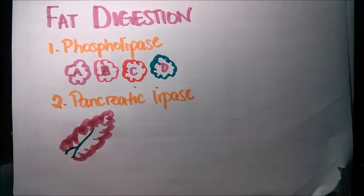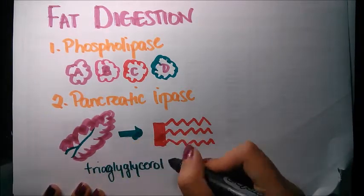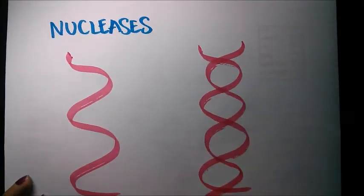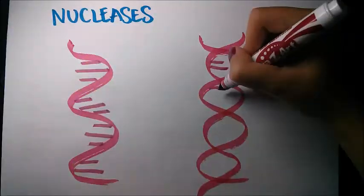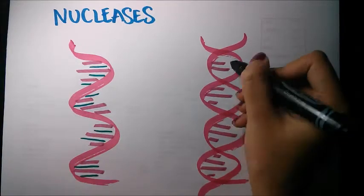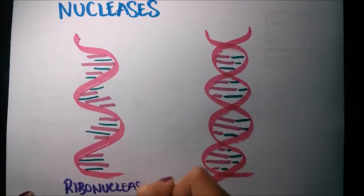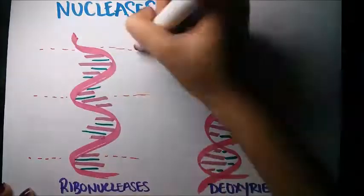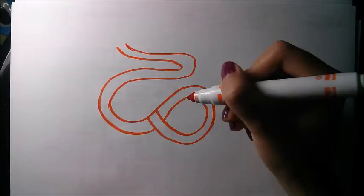The pancreas produces phospholipase to break down phospholipids into fatty acids, which have four major classes. Pancreatic lipase breaks down fat molecules into monoglycerides and free fatty acids. Nucleases are enzymes that break down nucleic acids. Deoxyribonuclease and ribonuclease are enzymes that catalyze the linkages in the DNA and RNA backbones respectively into smaller components.